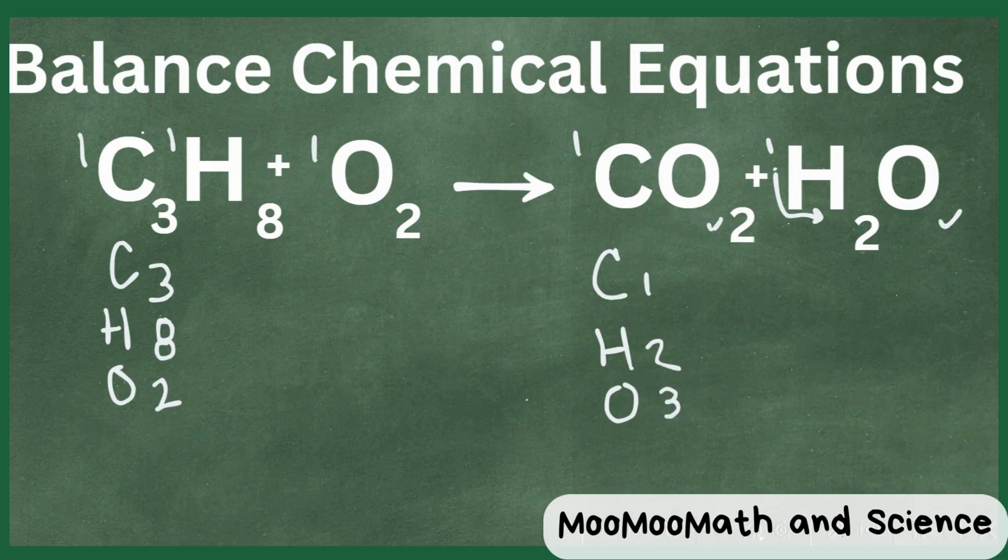Now let's start. Carbon is not balanced. We have 3 on the left, 1 on the right. So why don't we just change this coefficient to a 3. 3 times 1 is 3.